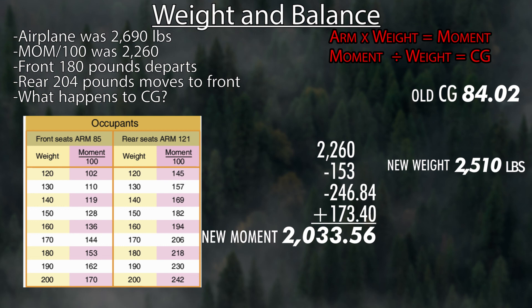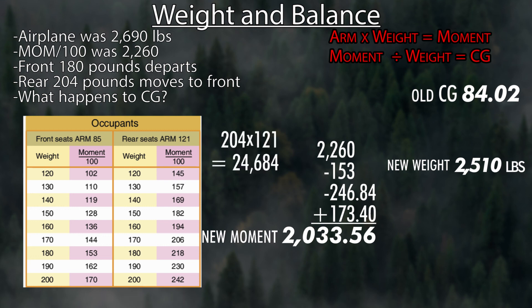When doing multiplication manually, check your answer for reasonableness. Looking at the chart: 180, 190, 200 — each time the moment goes up by about 12. So for 204 pounds, your answer should be around 245, 246, or 247. If you come up with 24,000 or 2,000, you know something's wrong. That's how you can quickly tell if you're close to the right answer.